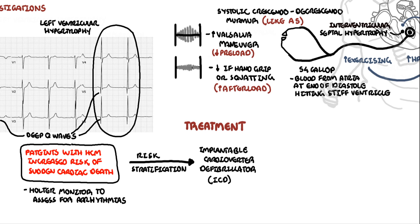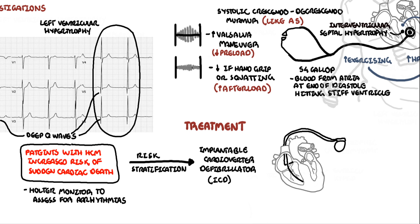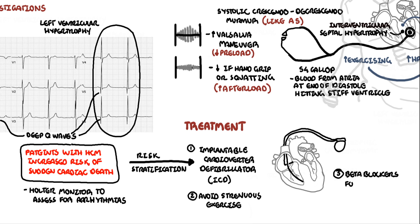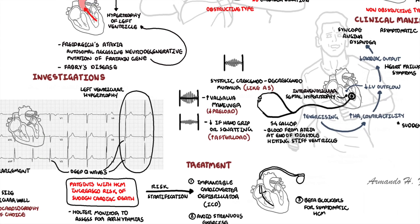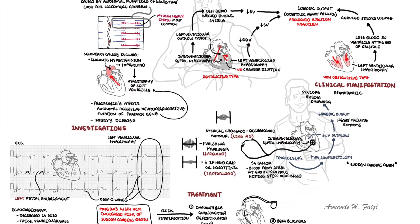A two-chamber ICD can be implanted for prevention of sudden cardiac death, which can occur from ventricular tachycardia. Patients should avoid strenuous exercise, as this exacerbates ventricular outflow tract obstruction and can lead to angina, syncope, dyspnea, and increased risk of arrhythmia. Beta blockers are the initial therapy in all patients with symptomatic hypertrophic cardiomyopathy. Surgical options such as septal myectomy or catheter-based alcohol septal ablation can be considered in patients who remain symptomatic despite maximal medical therapy.